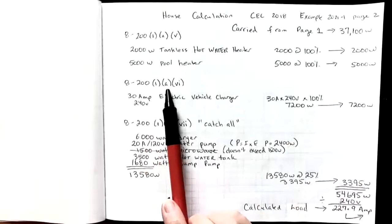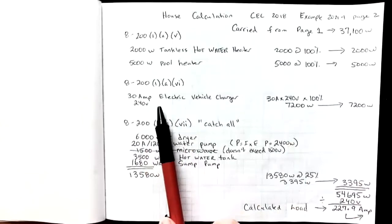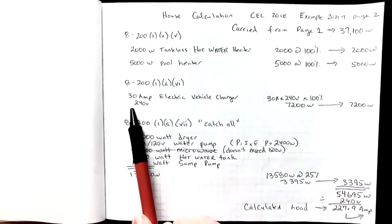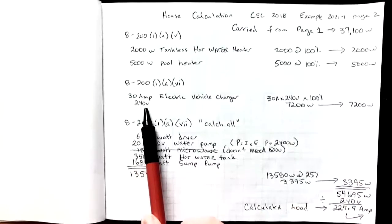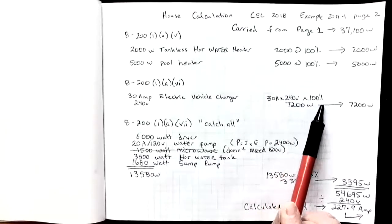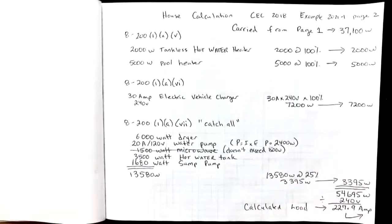Rule 8-200(1)(a)(6) is where we find the demand information for an electric vehicle charger. This was a 30 amp charger times 240 volts will give me my watts, and that would be 7,200 watts. We take that at 100% towards the main service.